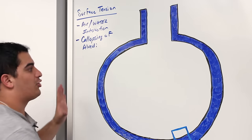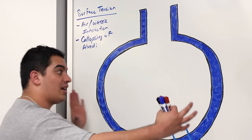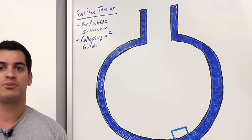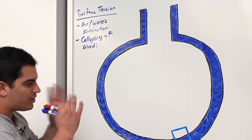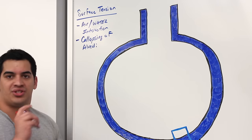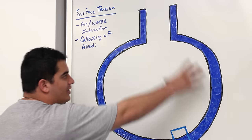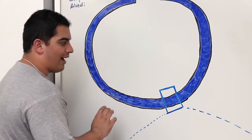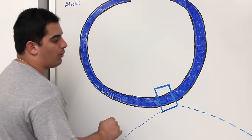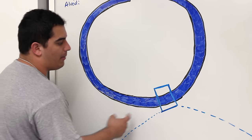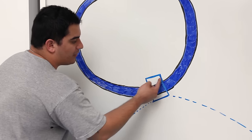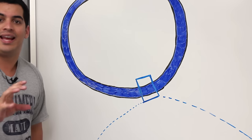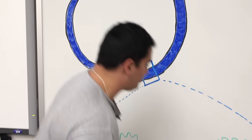Because of that tension, it tries to shrink the alveoli and tries to collapse the alveoli, causing them to assume the smallest size possible. To better understand this, let's take a section of that alveoli — the blue part which is the respiratory membrane — and look at the alveolar cells and the water-air interaction.